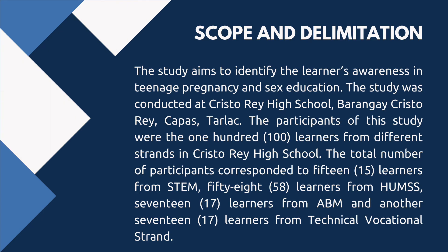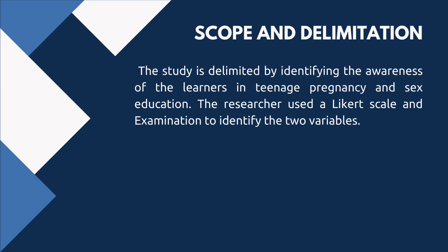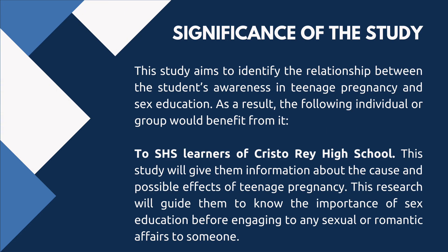The participants of this study were 100 learners from different strands in Crystal Ray High School. The total number of participants corresponded to 15 learners from STEM, 58 learners from HUMSS, 17 learners from ABM, and another 17 learners from Technical Vocational strand. The study is delimited to identifying the awareness of the learners in teenage pregnancy and sex education. The researcher used a Likert scale and examination to identify the two variables.